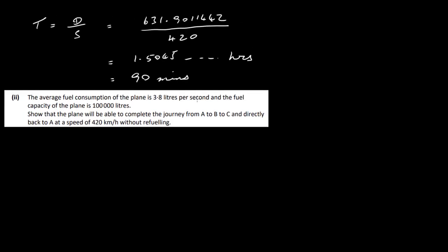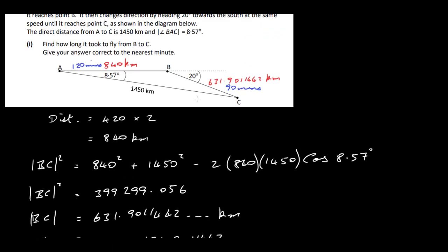The average fuel consumption of the plane is 3.82 litres per second and the fuel capacity is 100,000 litres. We need to show that the plane can complete the journey from A to B to C and then directly back to A at 420 km/h without refuelling. The direct distance from A to C is 1450 km, so that's the direct return leg.